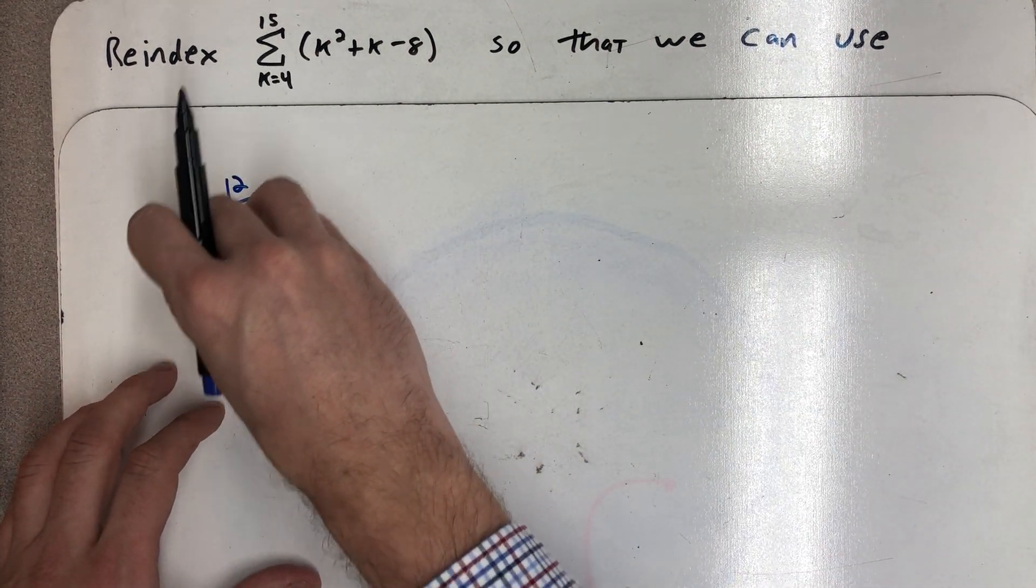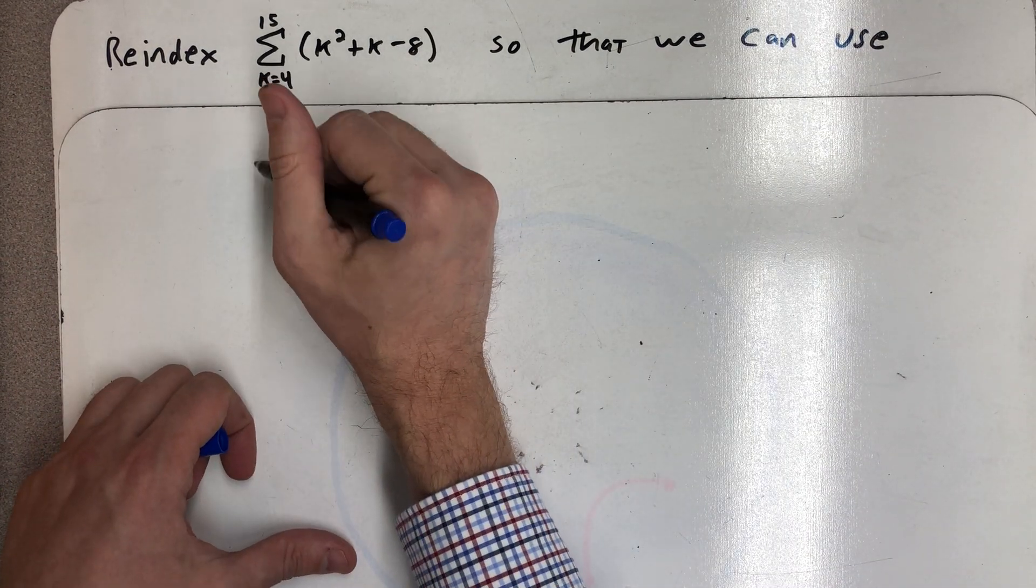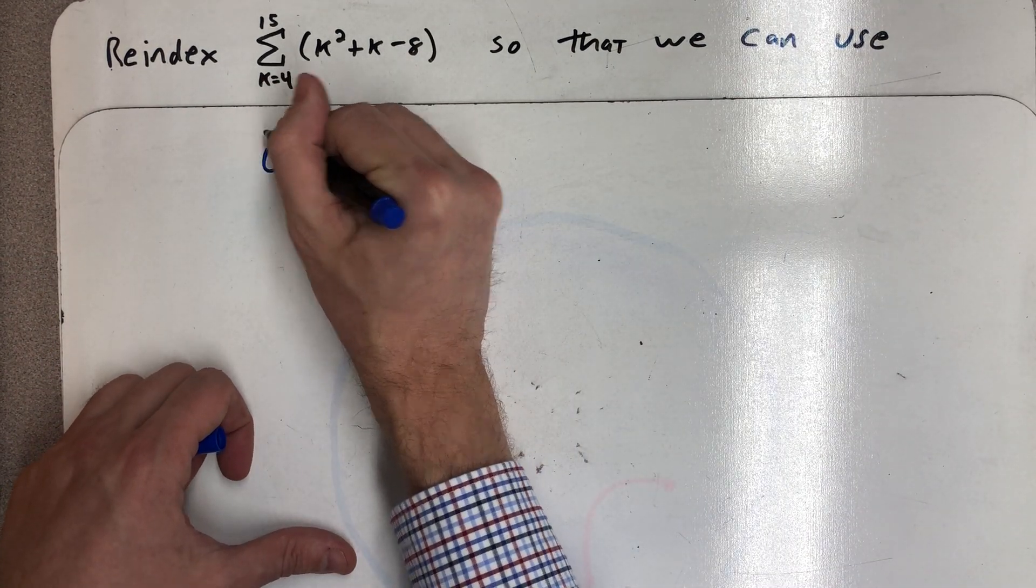I'm going to do it a little differently this time. Instead of using k again I'm going to let there be an i, so I'm going to change the index from being a k to being an i.